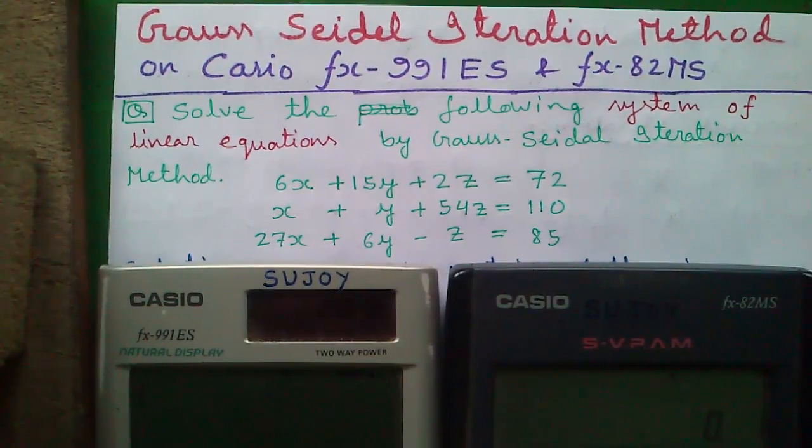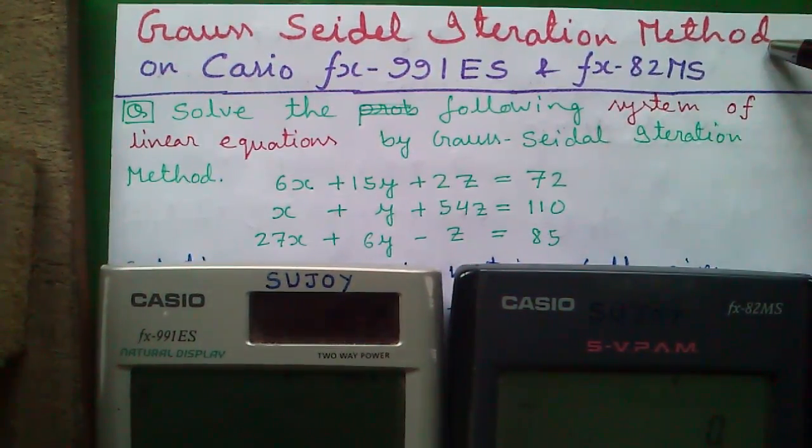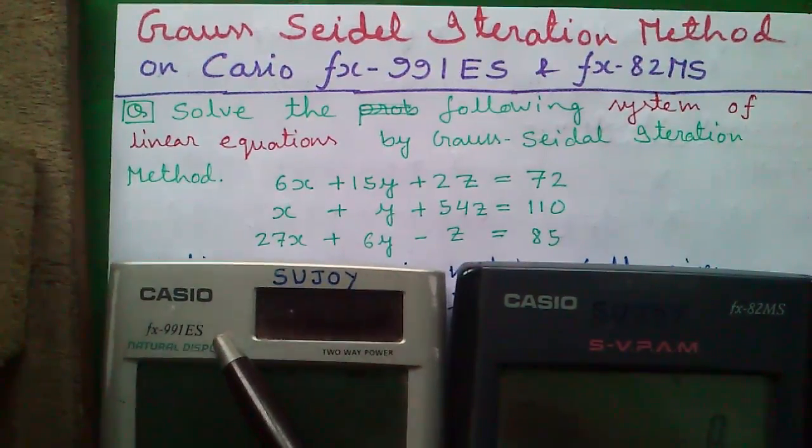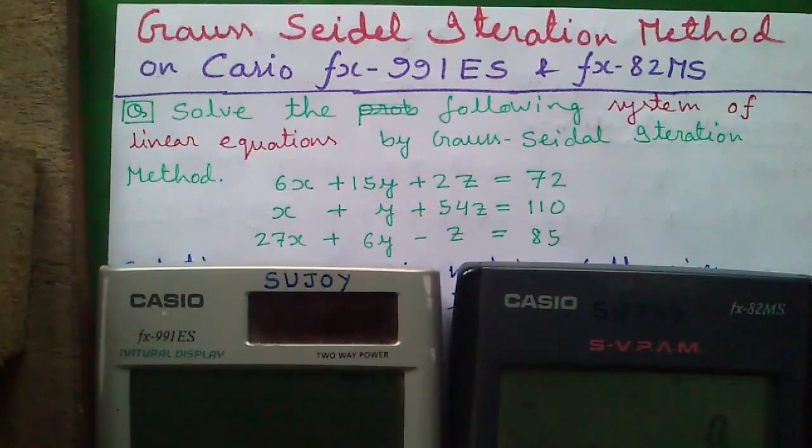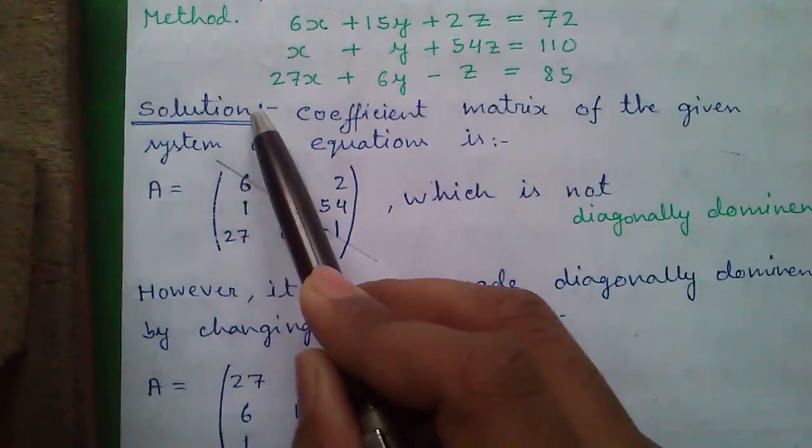Hello my dear friends, I am Sujoy and today I will tell you how to solve a system of three linear equations by Gauss-Seidel iteration method on Casio FX-911ES and FX-82MS calculators very easily. So let's start. These are our system of three linear equations and these are our solutions.